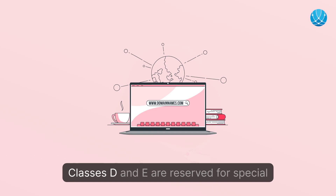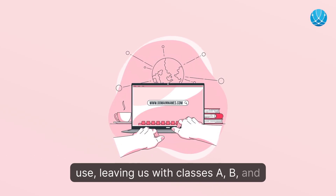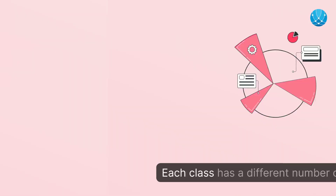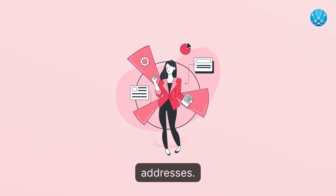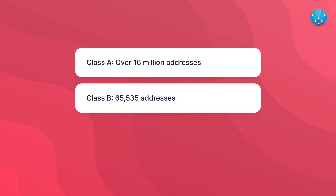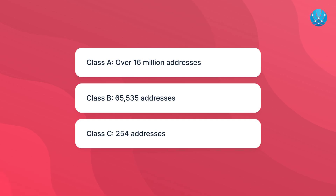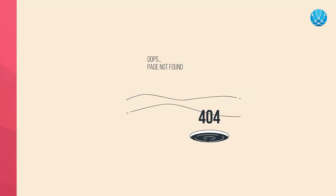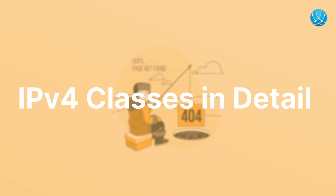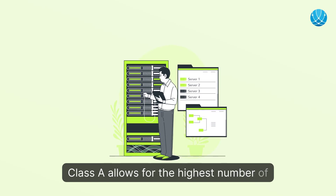There are five classes of IPv4 addresses: A, B, C, D, and E. Classes D and E are reserved for special use, leaving us with classes A, B, and C as the main focus. Each class has a different number of available addresses: Class A offers over 16 million addresses, Class B offers 65,535 addresses, and Class C offers 254 addresses.